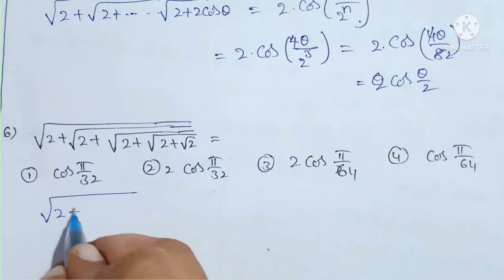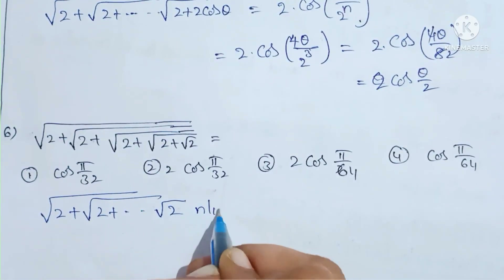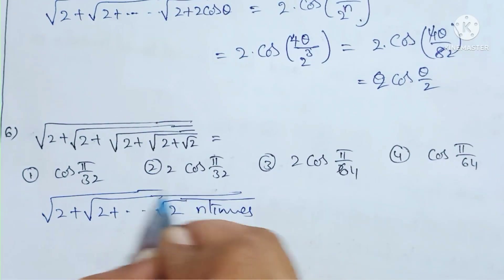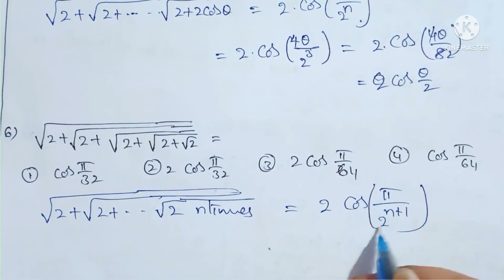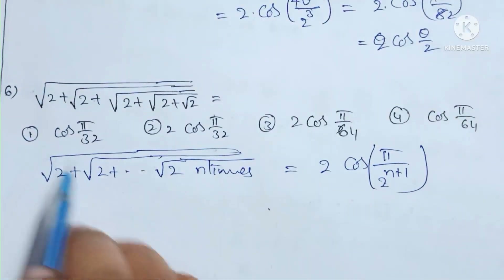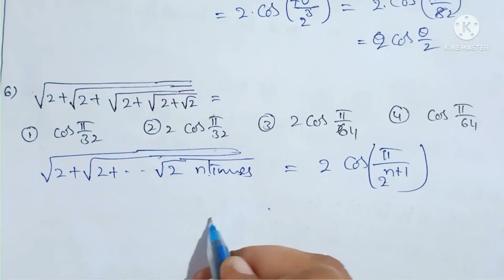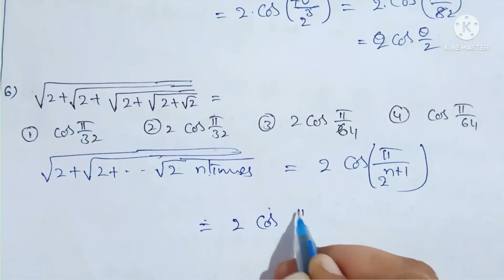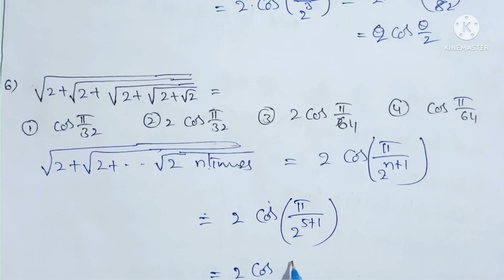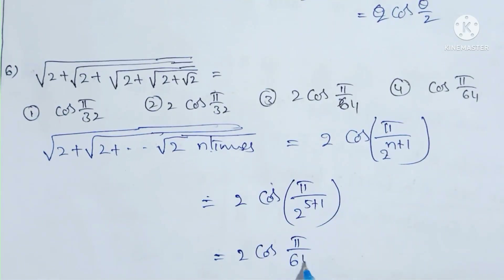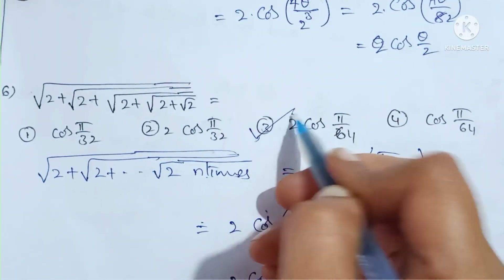For the specific nested radical √(2 + √(2 + √(2 + ...))) with n nested terms, using the formula 2cos(θ/2^(n+1)), and with θ = π and 6 nested roots (2^6 = 64), the answer is 2cos(π/64). That is option 3.